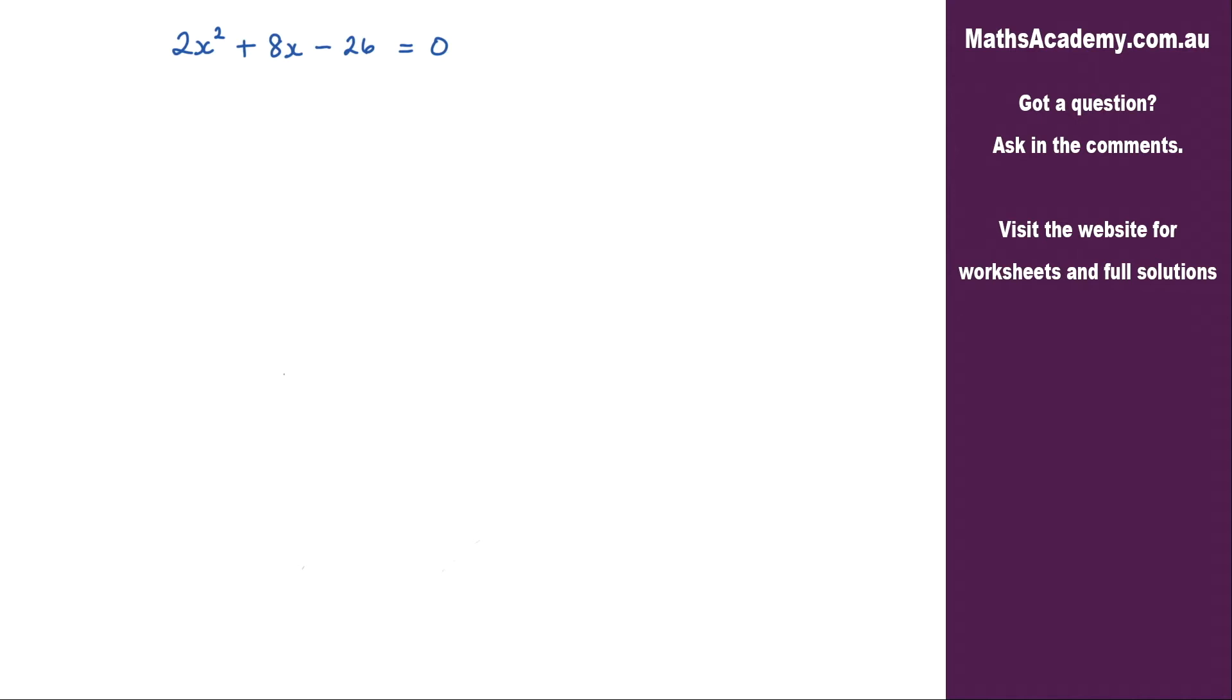Now when you look at this equation here, you might notice that each term is an even number. So we've got the 2, the 8, and the negative 26. So it makes sense to divide the whole thing by 2.